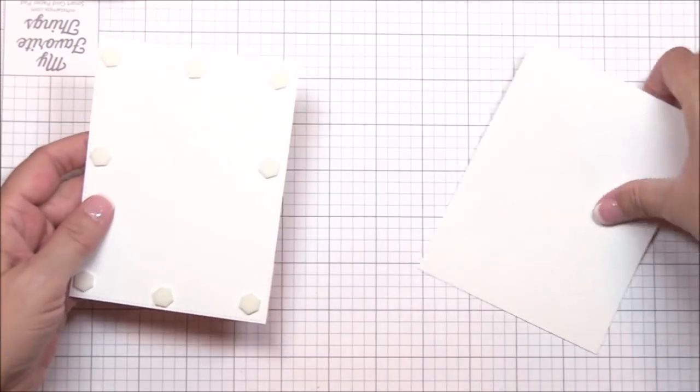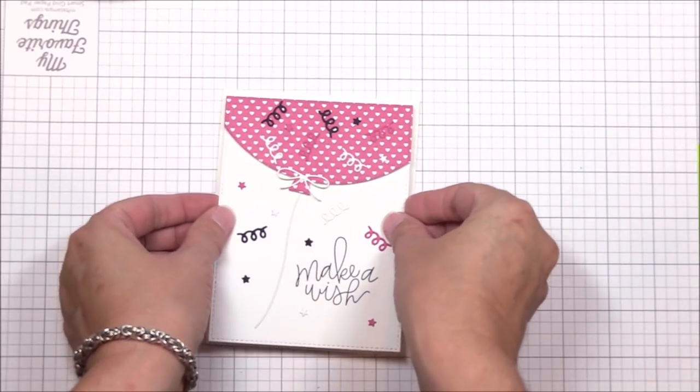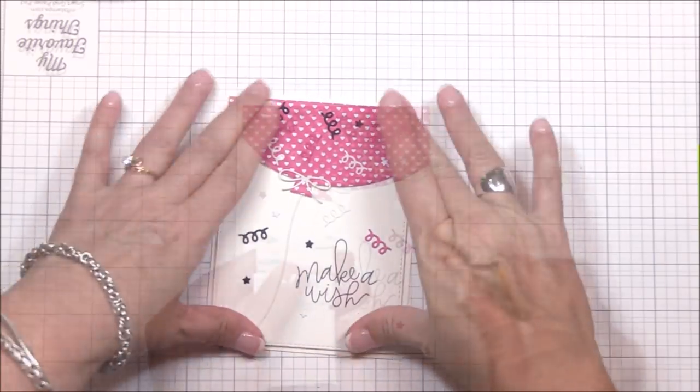And now I can adhere the image panel to the card base with some foam squares. And we're almost to the finish line so hang in there with me for just a bit longer.